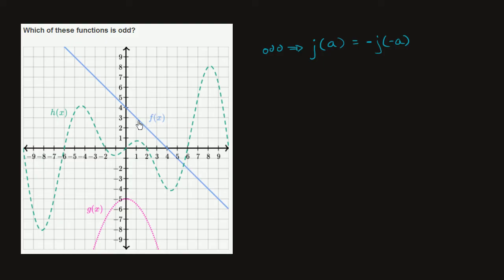So let's look at f of x. So we could pick a particular point. So let's say when x is equal to 2. So we get f of 2. f of 2 is equal to 2. Now what is f of negative 2? f of negative 2 looks like it is 6. f of negative 2 is equal to 6. So these aren't the negative of each other.